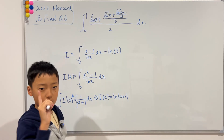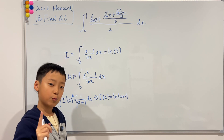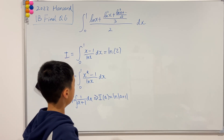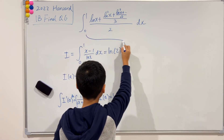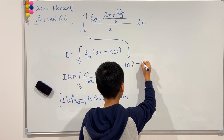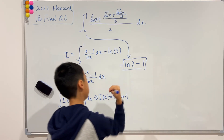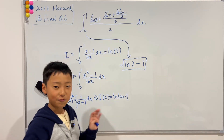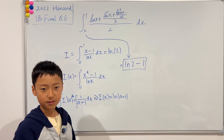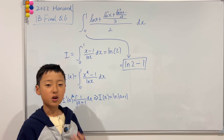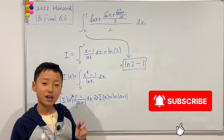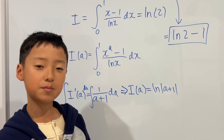We're not done yet — I left out the minus 1 earlier, so we still have to subtract 1. Therefore this integral equals ln(2) minus 1. That's the final answer to this super complicated-looking integral from the Harvard Integration Bee. Thank you so much for watching, and I hope you enjoyed the video. If you want more videos like this, please consider liking and subscribing. If you want to master something, teach it.